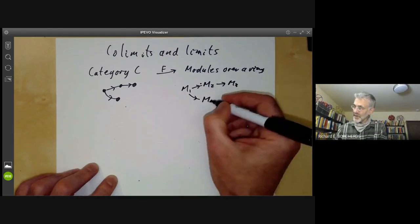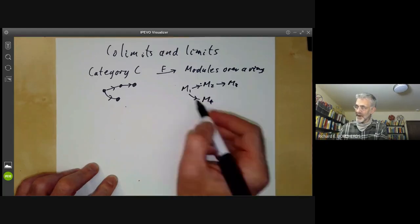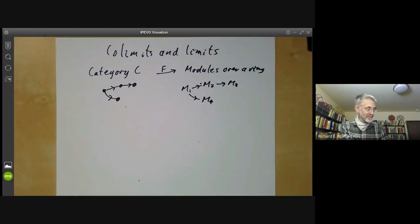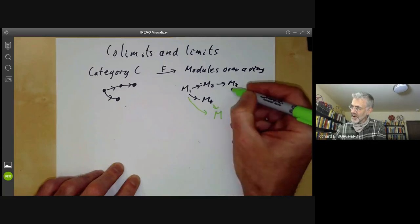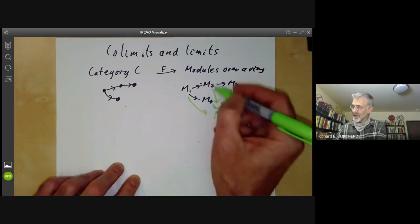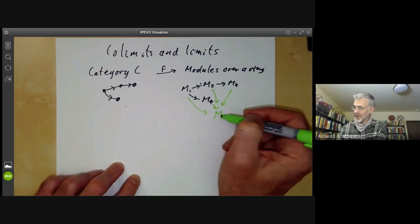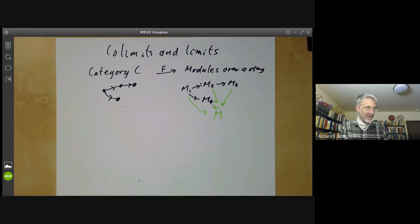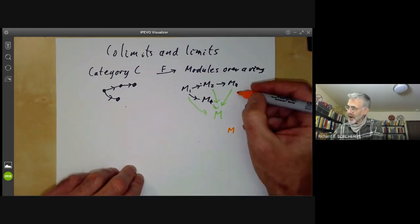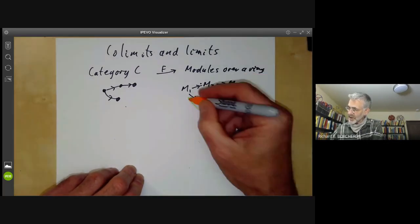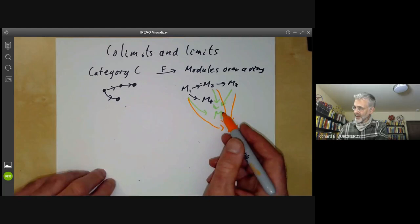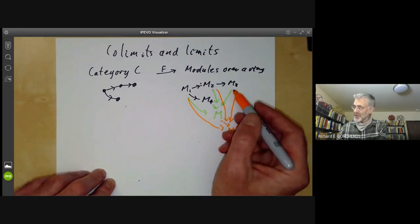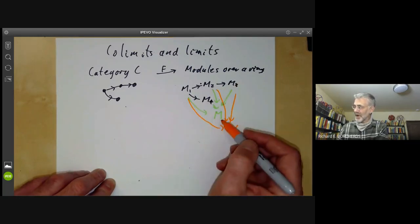So we might have modules M1, M2, M3, and M4, and morphisms between them. A co-limit is a universal object that all these modules map to. There is a module M and morphisms from all the Mi to M, making everything in the diagram commute. Furthermore, M is universal with this property: if we take any other module M prime with maps from all the Mi to M prime making everything commute, then there's a unique map from M to M prime. So M is the best possible object with maps from all the Mi making it commute.